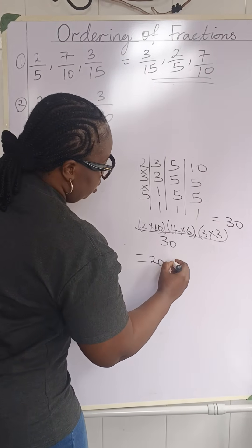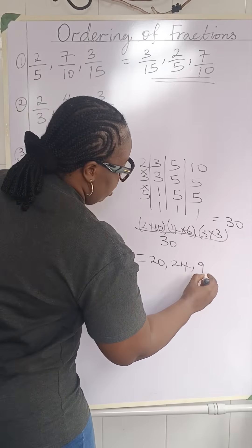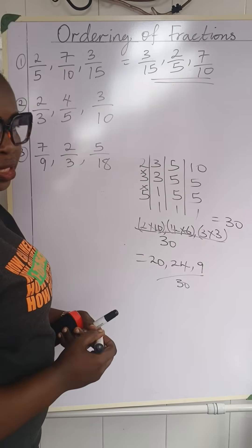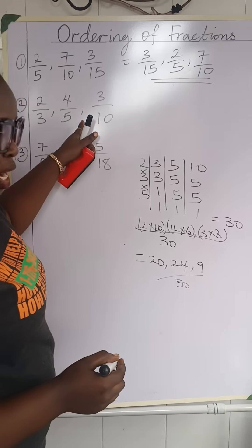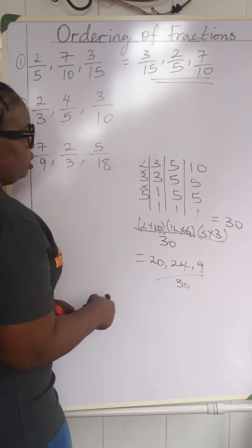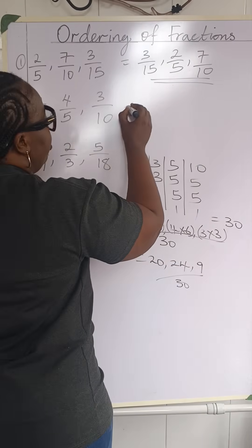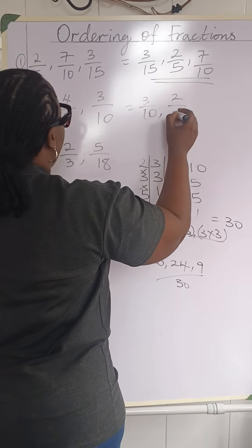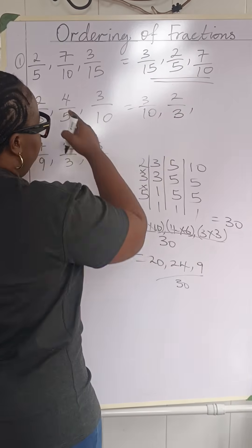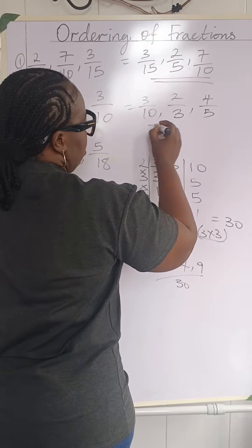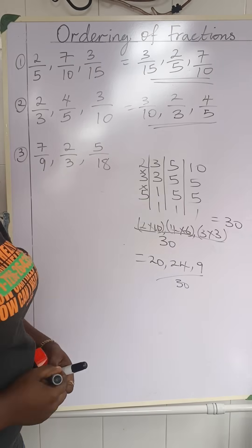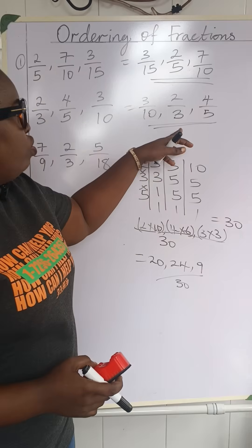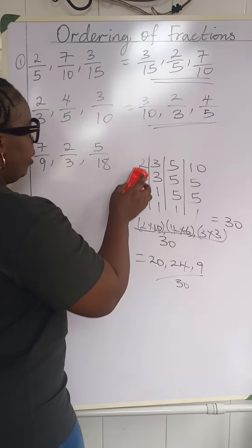Multiplying out: 2 times 10 is 20, 4 times 6 is 24, and 3 times 3 is 9 — all over 30. Comparing with the original fractions: the smallest is 9, which is 3 over 10. Next is 20, which is 2 over 3. And finally 24, which is 4 over 5. So ordering from smallest to biggest in ascending order: 3 over 10, 2 over 3, and 4 over 5.